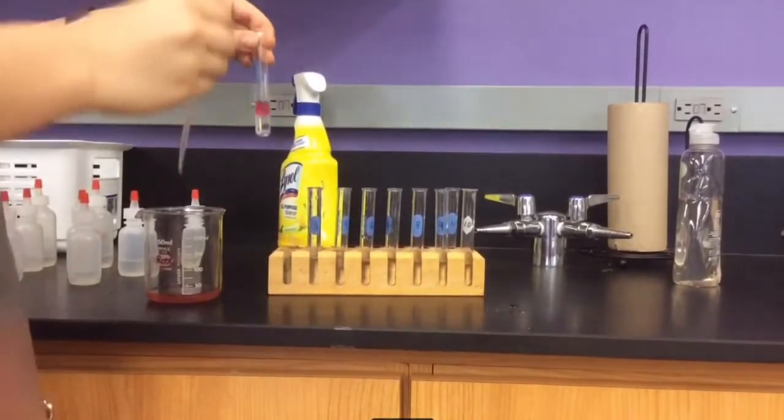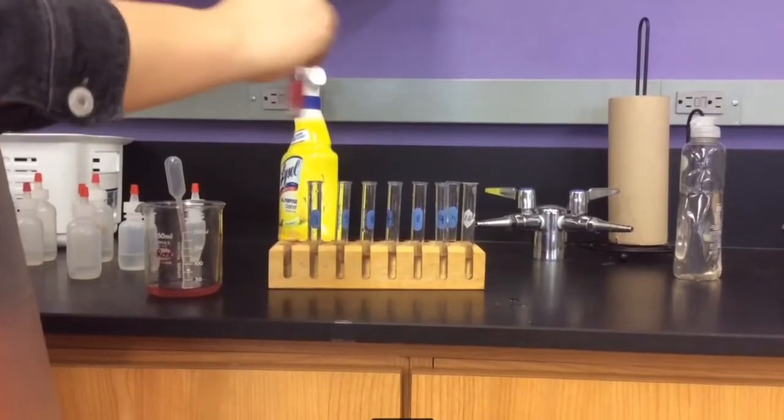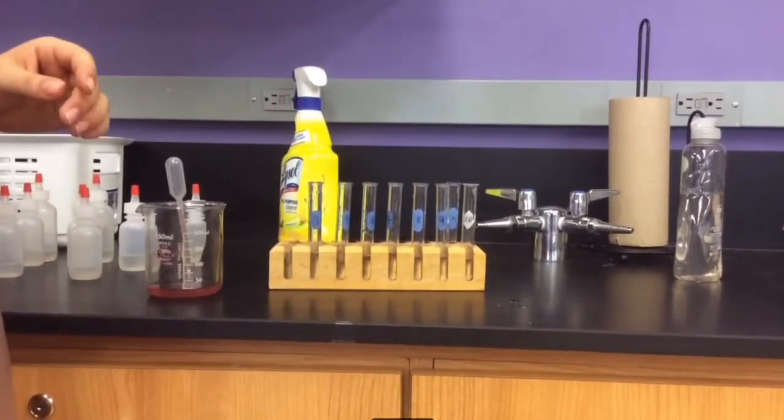Put 20 drops of the pH solutions in the test tubes. Add 10 drops of the indicator to each test tube. Observe the change in color.